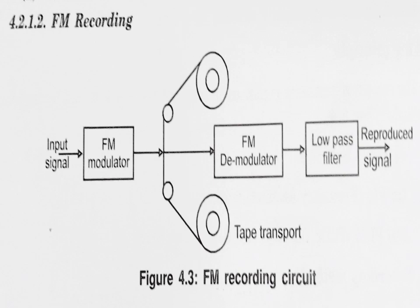Moving on to FM recording: here the signals are modulated before entering into the magnetic tape. Then, this modulated signal is recorded in terms of magnetic pattern. Then it is demodulated and filtered to remove the unwanted signals. Finally, we are getting the signal as electrical.